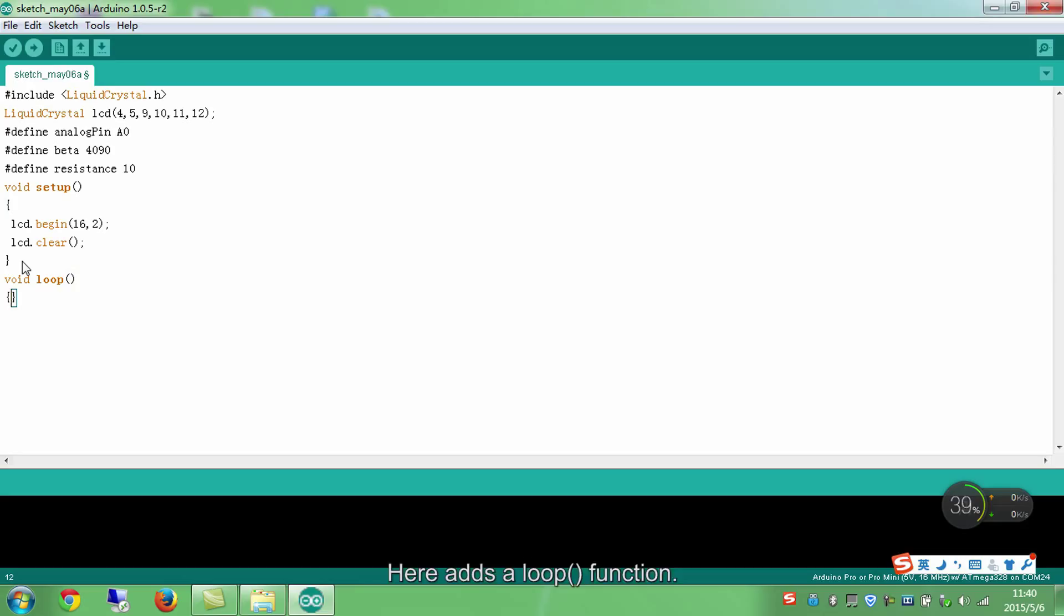Here is a loop function. Read the resistance value of the thermistor to A via the signal from the analog pin. Here use a long type to make the value of A to be a long integer.